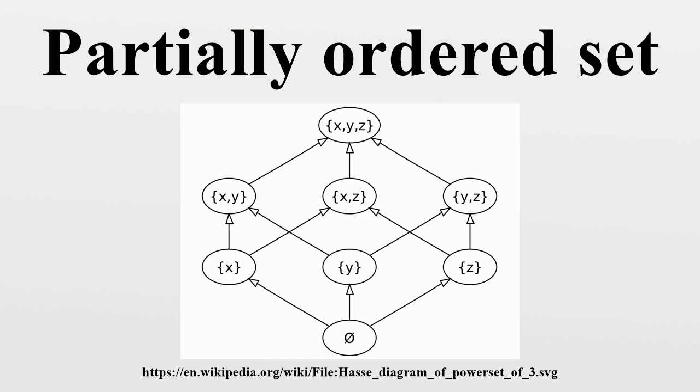A finite poset can be visualized through its Hasse diagram, which depicts the ordering relation. A familiar real-life example of a partially ordered set is a collection of people ordered by genealogical descendancy. Some pairs of people bear the descendant-ancestor relationship, but other pairs bear no such relationship.